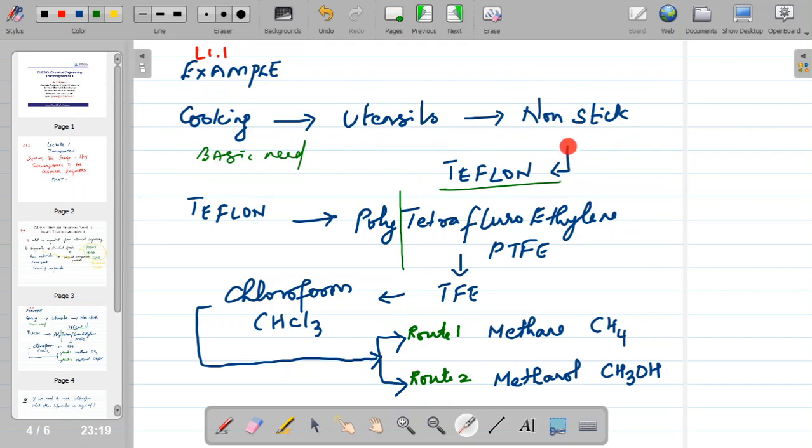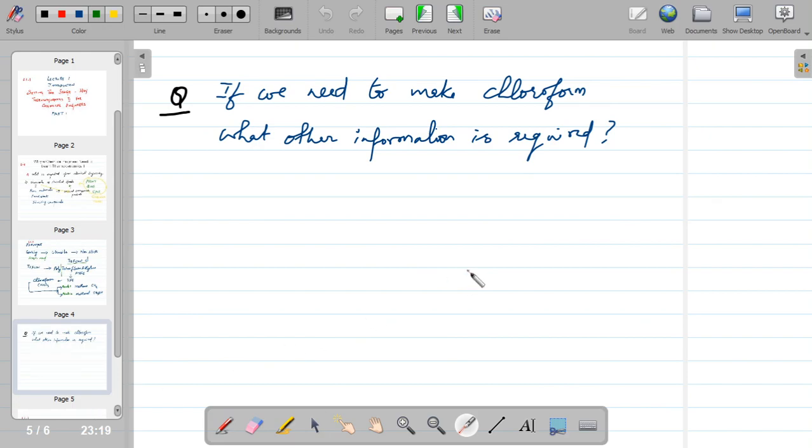For this I need to make this chemical. This chemical itself comes from polytetrafluoroethylene and tetrafluoroethylene which is a monomer. And this chemical is made from chloroform and chloroform itself is made from methane or from methanol. So if we need to make chloroform from any of these routes, either a methanol route or a methane route, what other information do you look for?